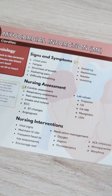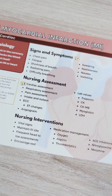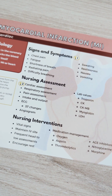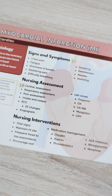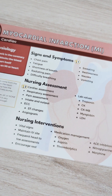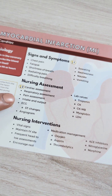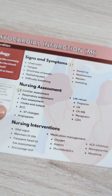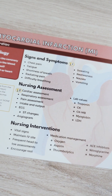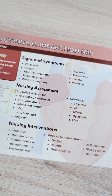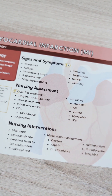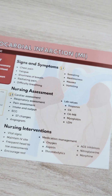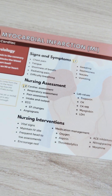You'll want to assess for cardiac function and respiratory status — make sure they're breathing okay, because if the heart is not functioning well, the respiratory system can be compromised as well. Track their intake and output, and their ECG — they should be on an ECG monitor and you're looking for ST changes. An angiogram might be needed. For lab values, you're looking at troponin, CK, CKMB, myoglobin, and LDH.